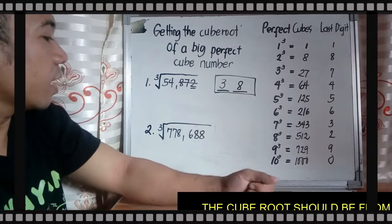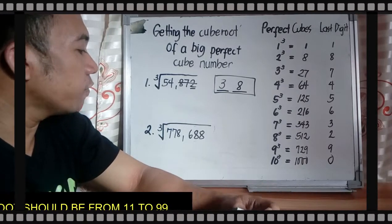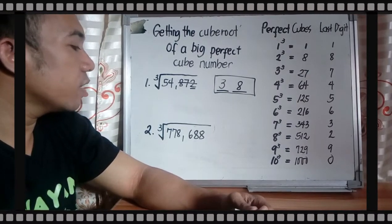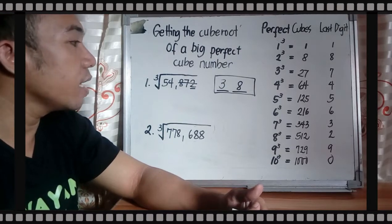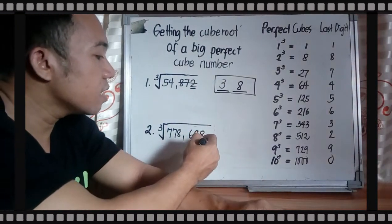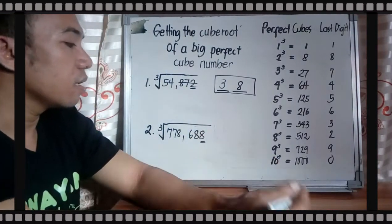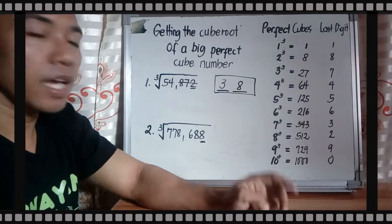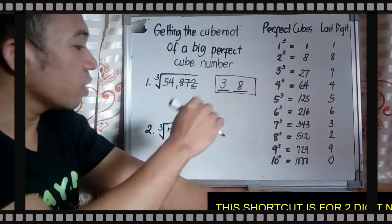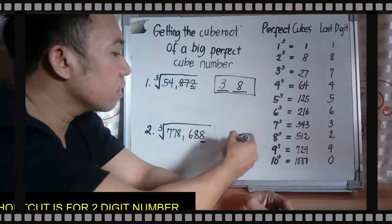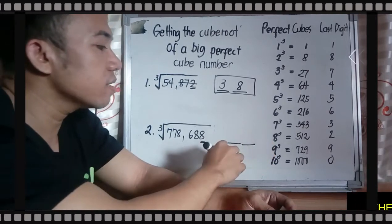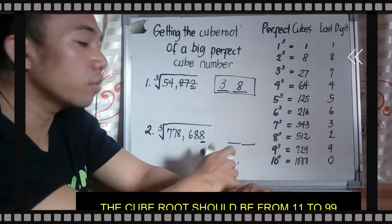What about cube root of 778,688? Your last digit is 8. Again, it interchanges. So if your last digit is 8, your ones digit for your two-digit number cube root is 2.